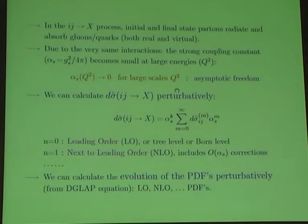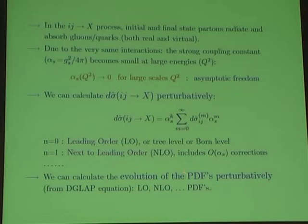When you calculate something at a given order, you must match properly the order of the perturbative expansion between sigma-hat and the parton distribution functions you are convoluted with. The evolution of the parton distribution functions is perturbative and can be calculated order by order. You can calculate them at leading order, next-to-leading order, or higher through the DGLAP equations.